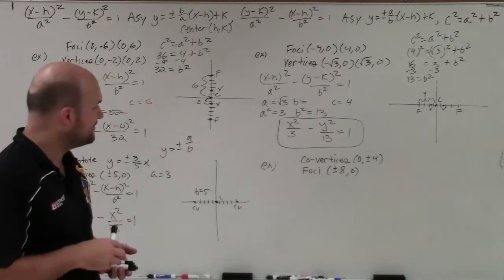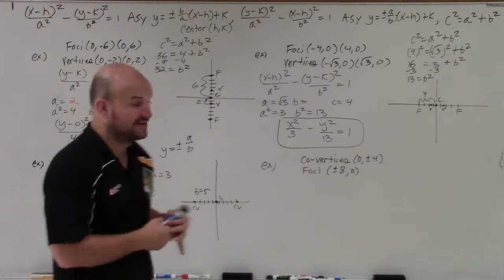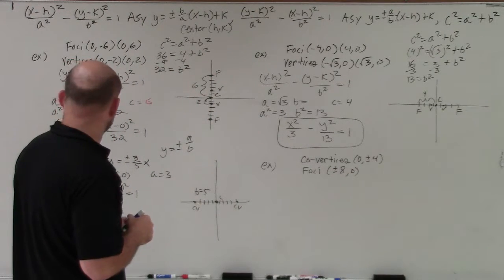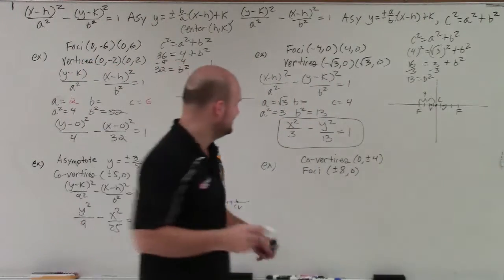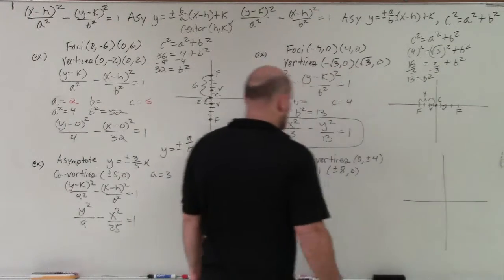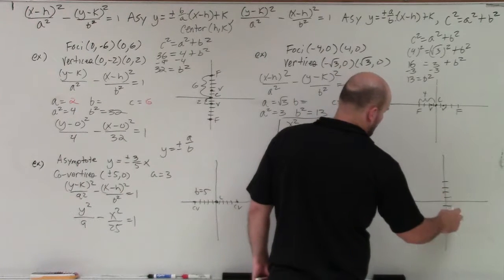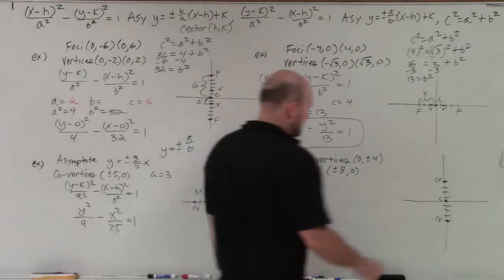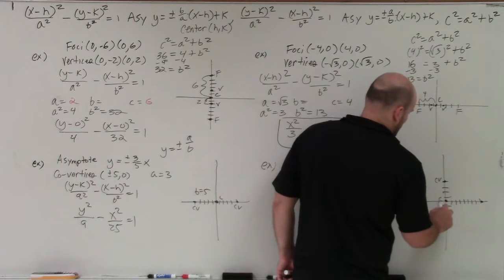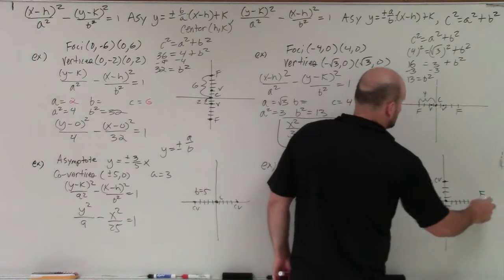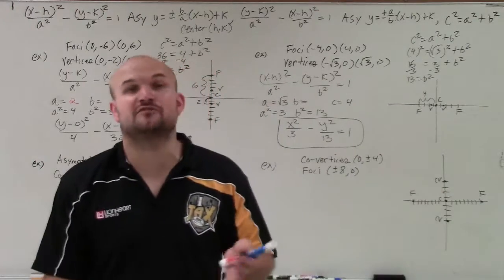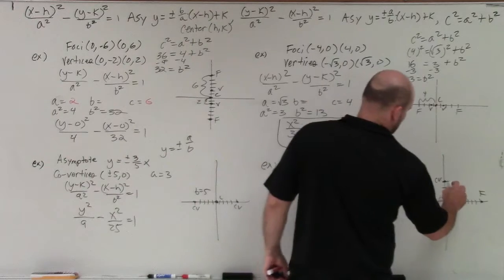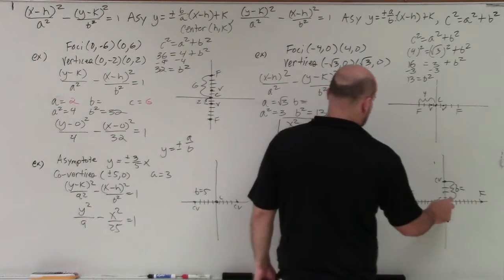For the last example, I'm given co-vertices and foci. My co-vertices are at (0, +4) and (0, -4), and my foci are at (8, 0) and (-8, 0). Co-vertices lie on the conjugate axis; vertices and foci lie on the transverse axis. Since my foci are going left and right, the transverse axis is horizontal, so I'll use the horizontal equation. The distance from the center to the co-vertex is B, which is 4. The distance from the center to the foci is C, which is 8.